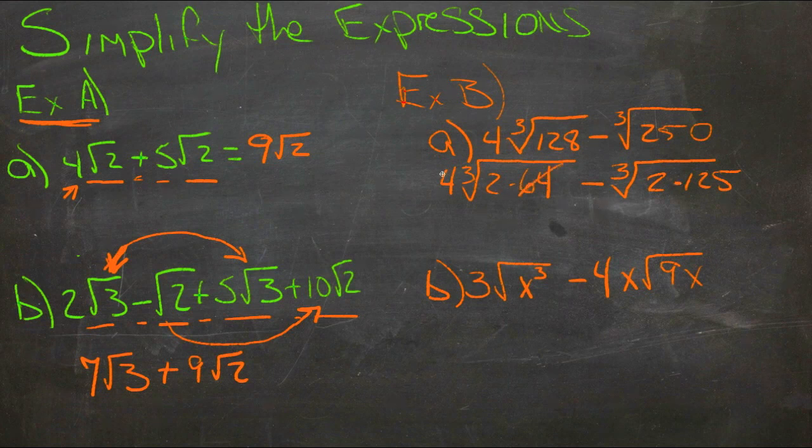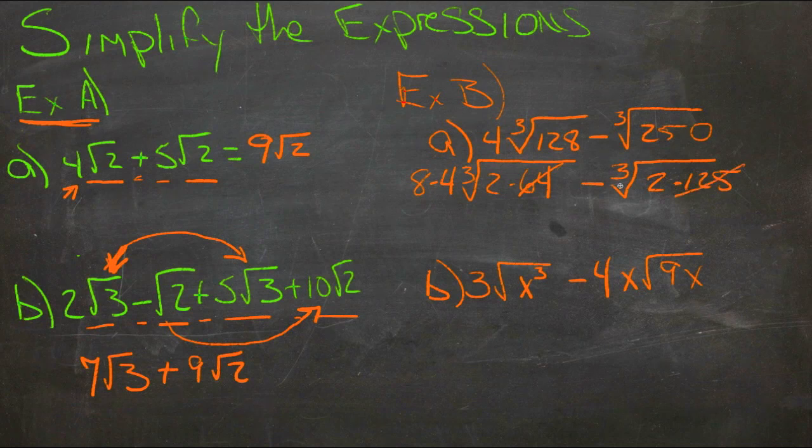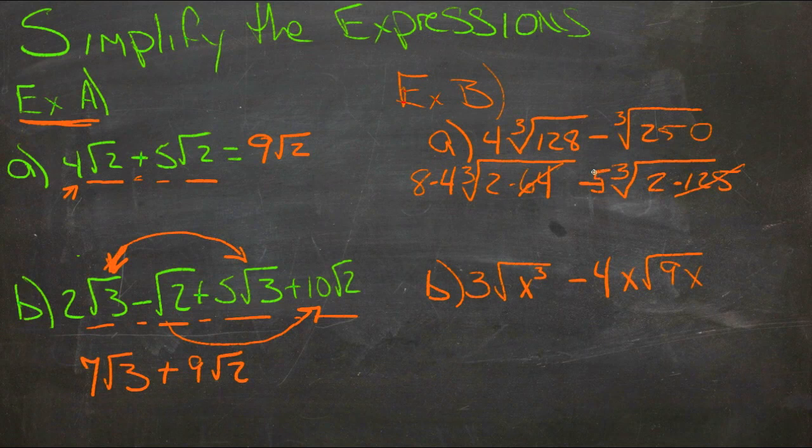So then we'll pull out the 64. That's an 8. And we'll pull out the 125. That's a 5. Almost no room for a 5 in there, huh? There we go. Just kind of fudge it in there.